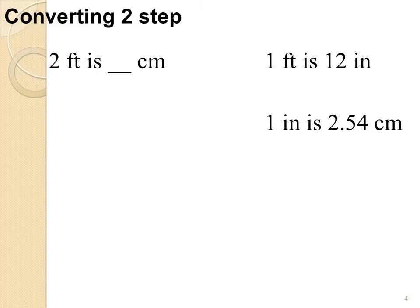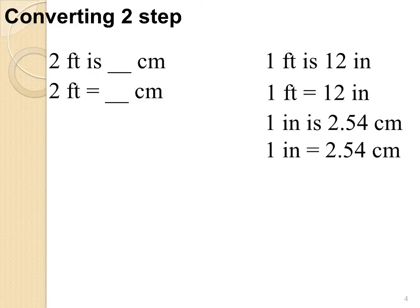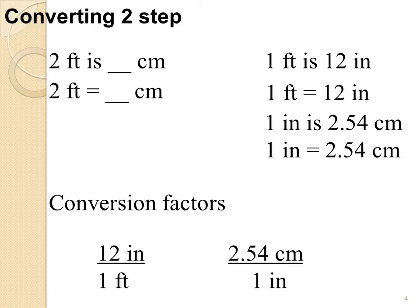In this case I've got two feet is blank number of centimeters. And I've got two sets of equalities. I've got one foot is twelve inches. I've got one inch is two point five four centimeters. Now let's get everybody into an equation. So I've got two feet equals some number of centimeters. A foot equals twelve inches. And an inch equals two point five four centimeters.